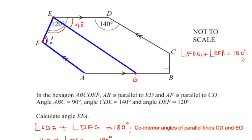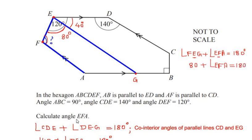In the previous step we got the value of angle DEG as 40 degrees, and the total angle DEF is given as 120 degrees, so angle FEG becomes 120 minus 40, which is 80 degrees. Substituting, we get 80 degrees plus angle EFA equals 180 degrees, so angle EFA equals 180 minus 80 degrees.